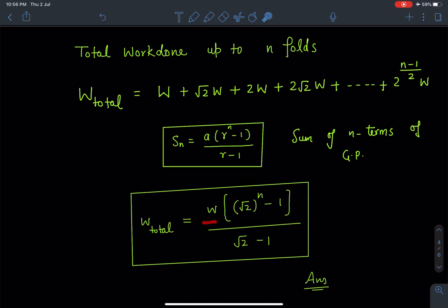So this W_total I can write as W times (√2^n - 1)/(√2 - 1). This is going to be the answer for third part. So I hope you have enjoyed this problem. It involves a different type of approach.